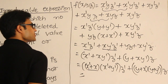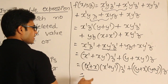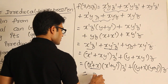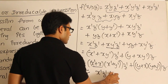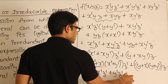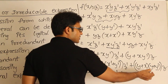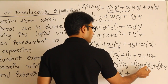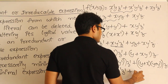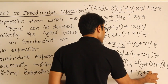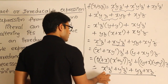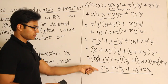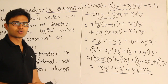Then obviously it is x plus x prime, which is 1. Therefore you can expand these two. The solution is x prime z prime plus y prime z prime. Then y plus y prime is obviously 1, and you can expand these two: y z plus x z. Therefore when I try to minimize these six terms, I got four terms in which each term contains two literals.